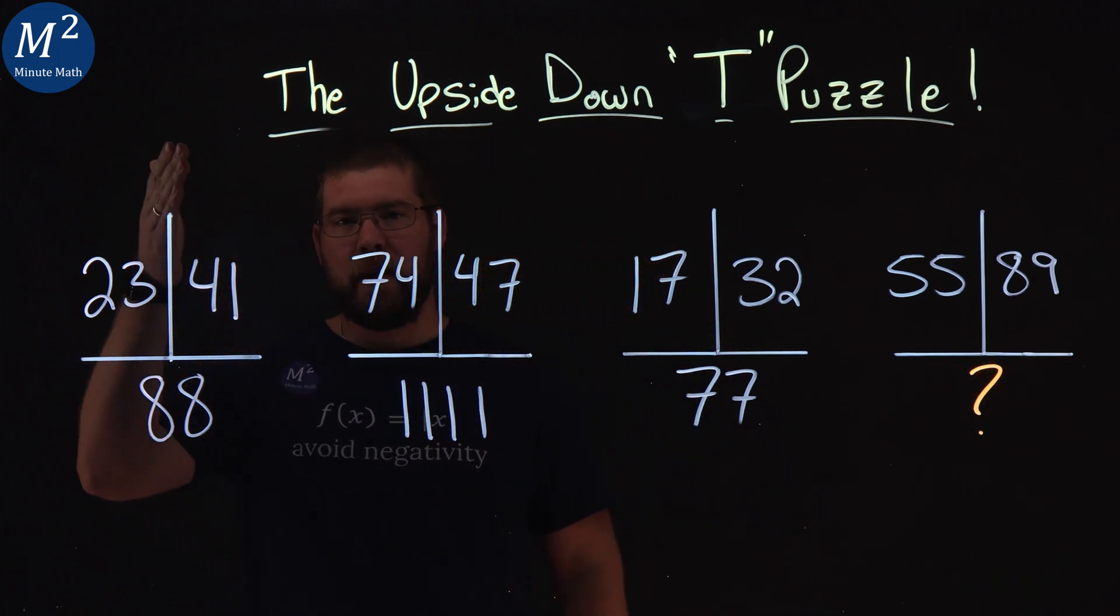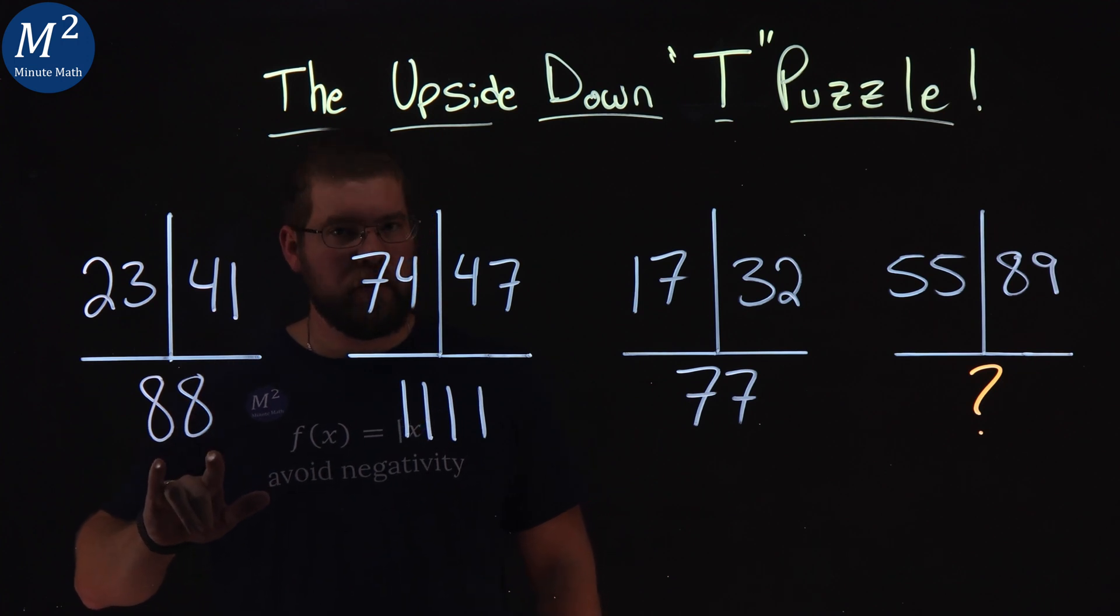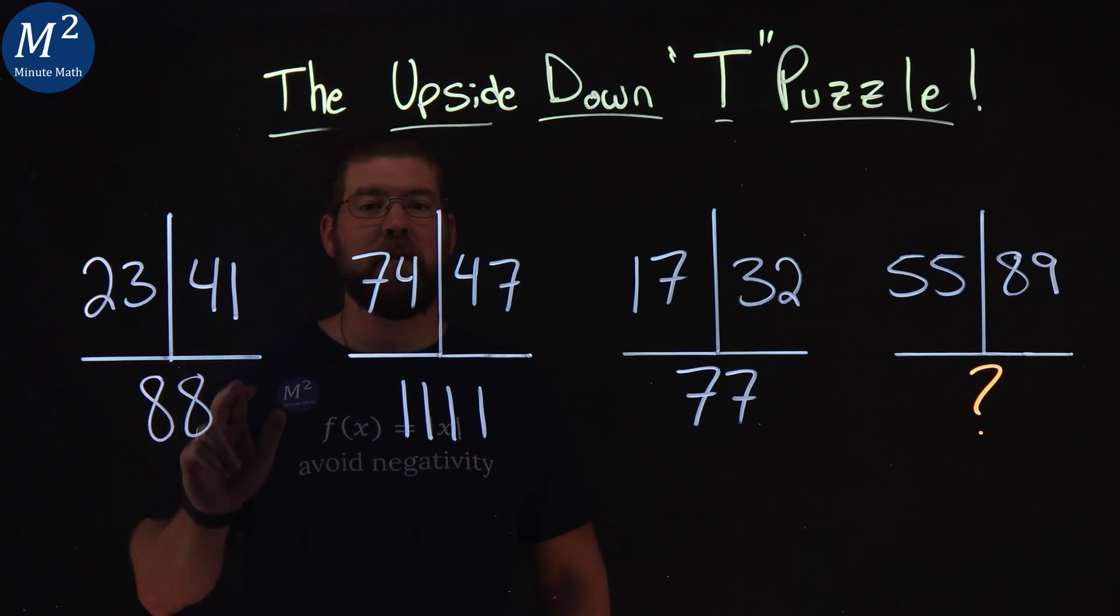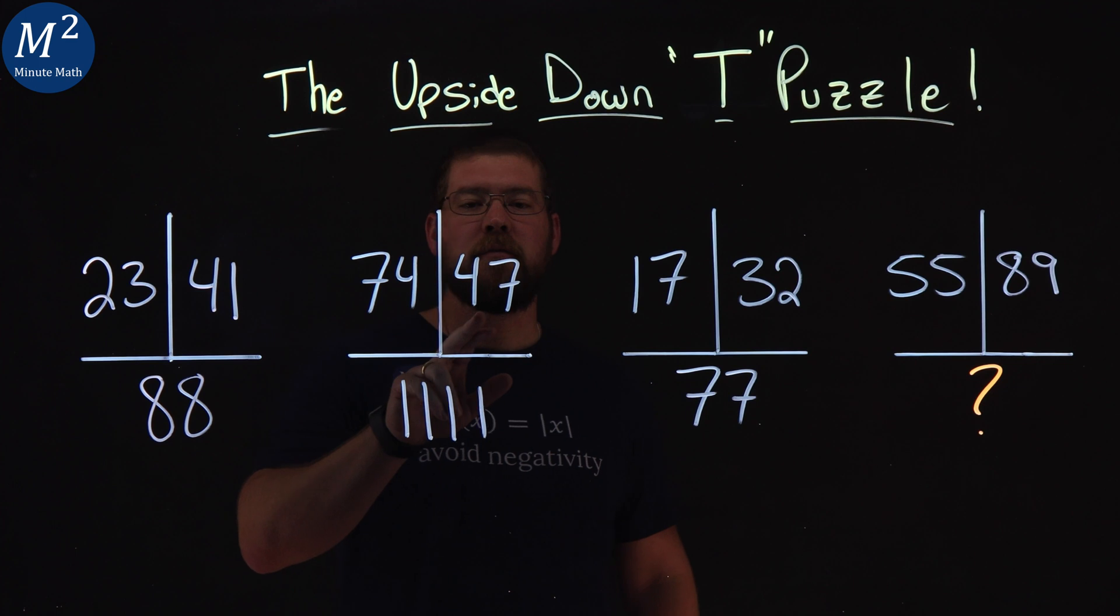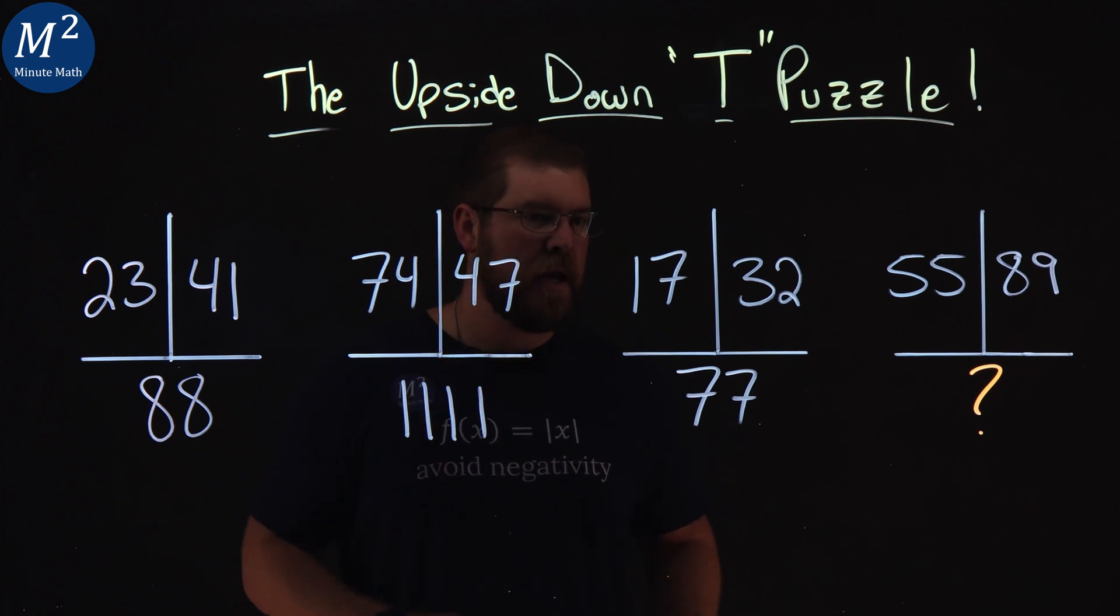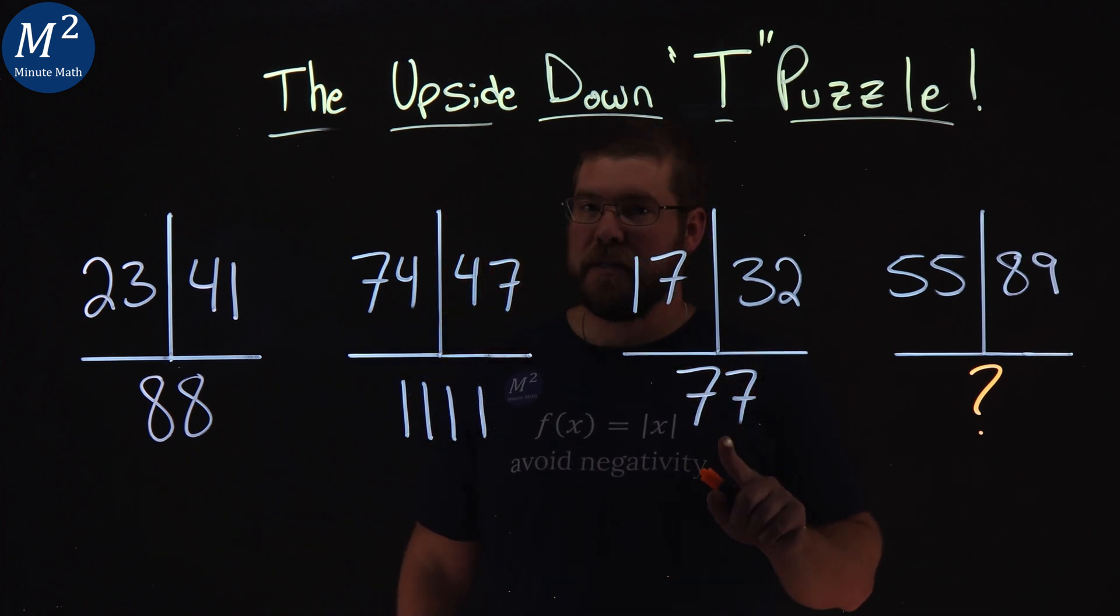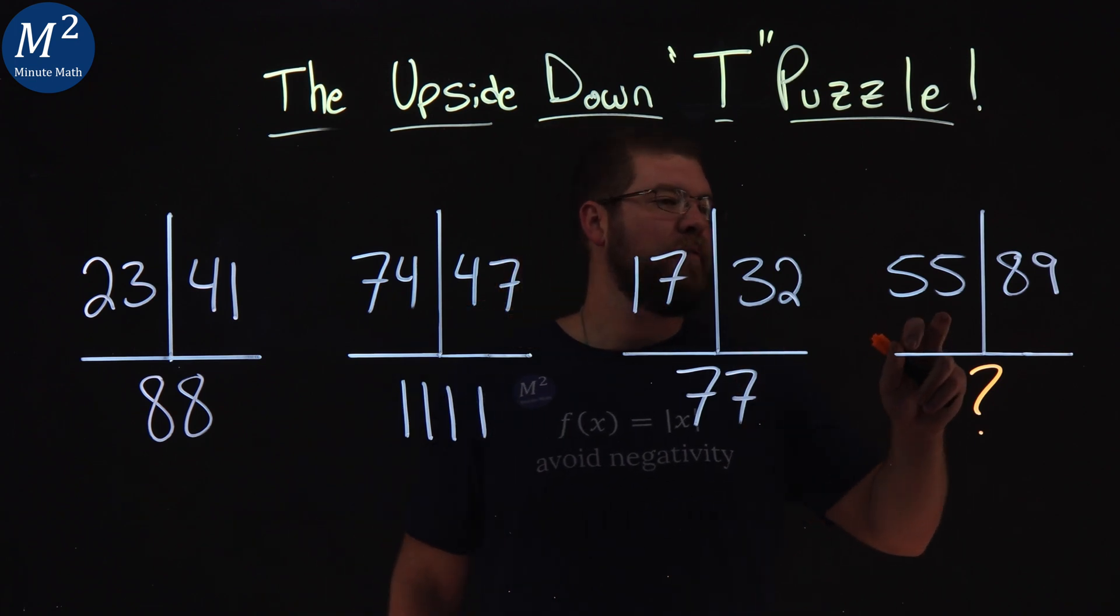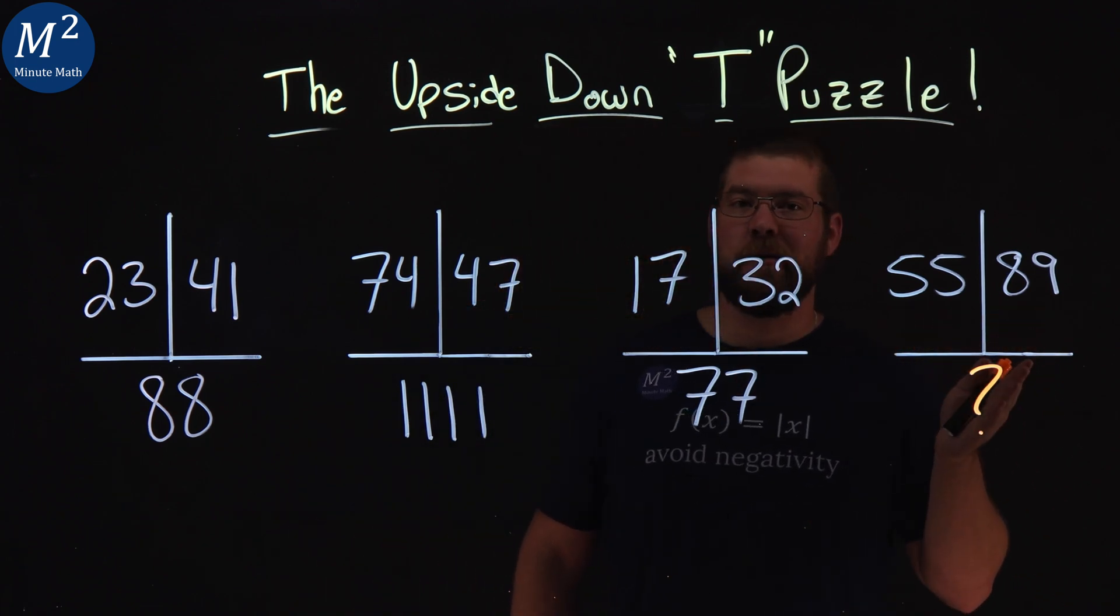We have two numbers up here with an upside down T which gives us a third number. So 23 and 41 make 88, 74 and 47 make 1,111, 17 and 32 make 77, and 55 and 89 make what?